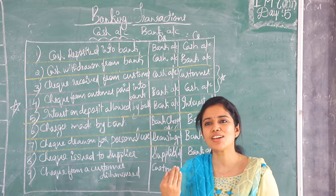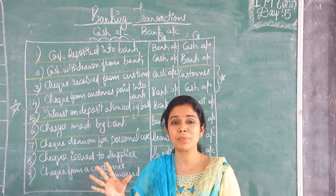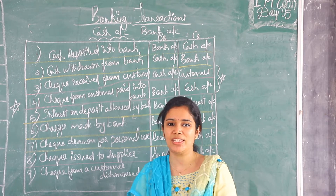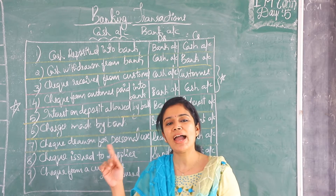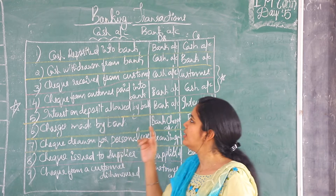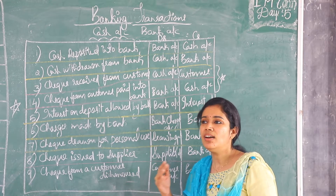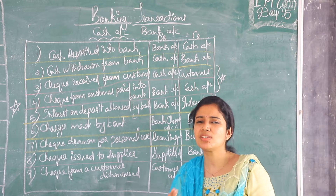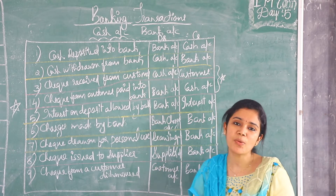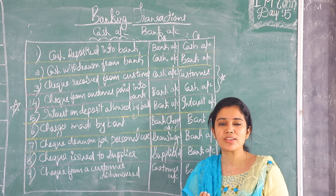Cash represents cash in hand, and bank represents cash at bank. Cash in hand — cash account. Bank account represents cash at bank. So these are the probable transactions which can happen with regard to a bank. The first one is cash deposited into bank.